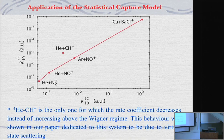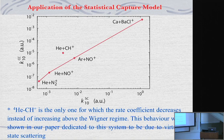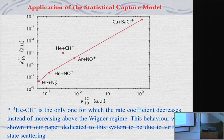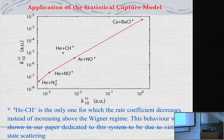We can predict the efficiency of vibrational quenching knowing only the well depth of the complex, the vibrational frequency of the diatom, the polarizability of the atom, and the relative mass. From that, we can predict if it is going to be efficient or not. HeOCH+ is the only one slightly outside this variation. It was shown in our dedicated paper that this is due to virtual state scattering, simply meaning there is a bound state with energy nearly zero.